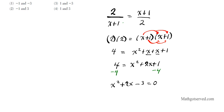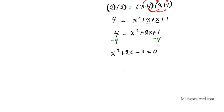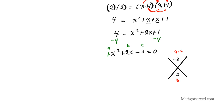Now we have a quadratic equation. We can solve it by factoring, using the quadratic formula, or completing the square. I'm going to use the AC method. This involves the x-game: put A times C on top and B on the bottom. There's no coefficient for x squared, so A equals 1. So AC equals 1 times negative 3, which is negative 3, and B equals 2.